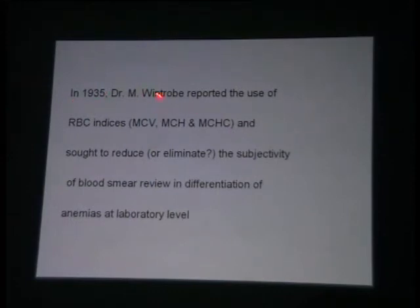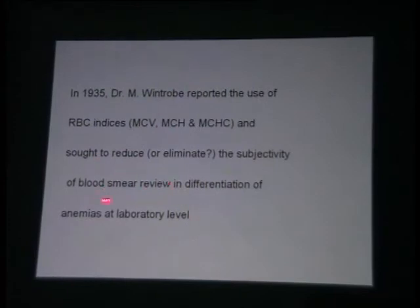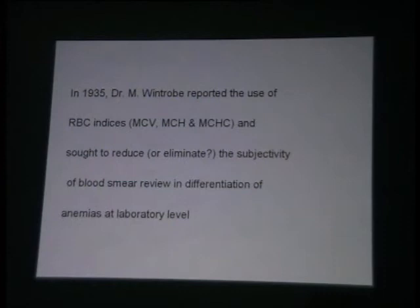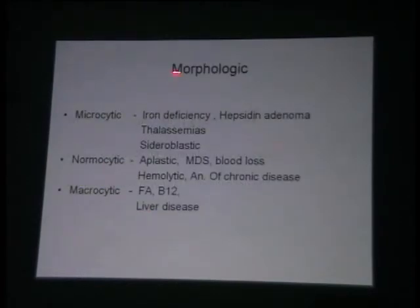In 1935, Dr. Winthrop reported the use of RBC indices. Coming back to morphologic classification — micro, normo, or macrocytic by looking at the smear — he said, to remove the subjectivity of individual reviewers, let us put data to use. He was the first, in 1935, to propose the use of RBC indices: MCV, MCH, and MCHC, to reduce or eliminate the subjectivity of blood smear review in the differentiation of anemias at the laboratory level.